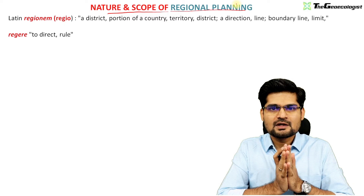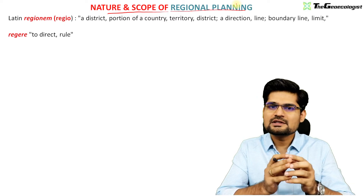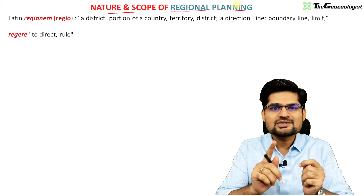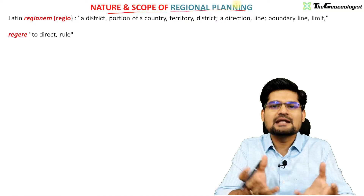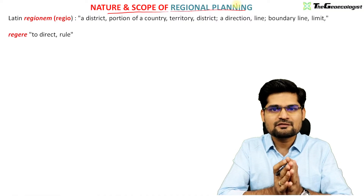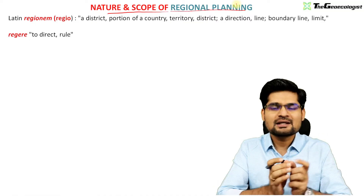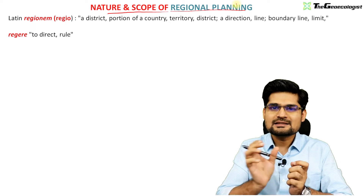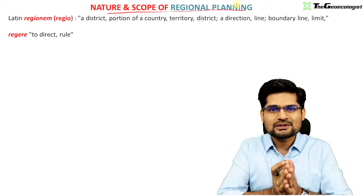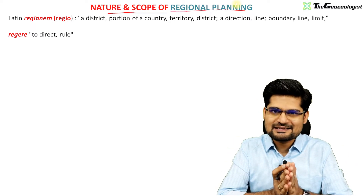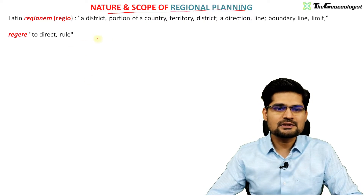Looking into regional planning, the two key words are 'region' and 'planning.' So firstly, let's understand the concept of region, then the concept of planning, and then we can combine both to understand the nature and scope of regional planning.